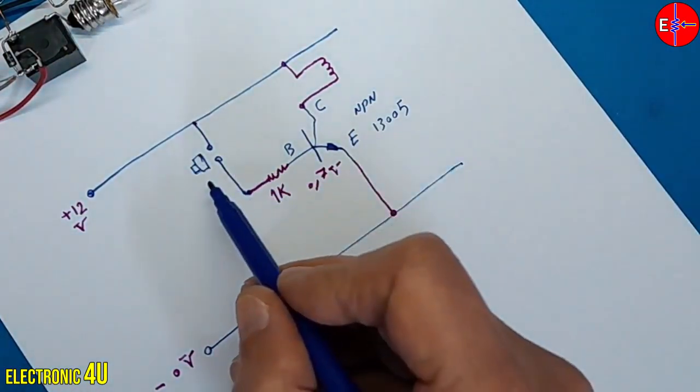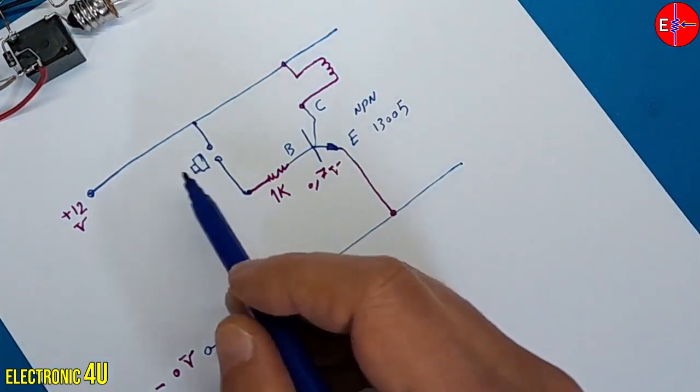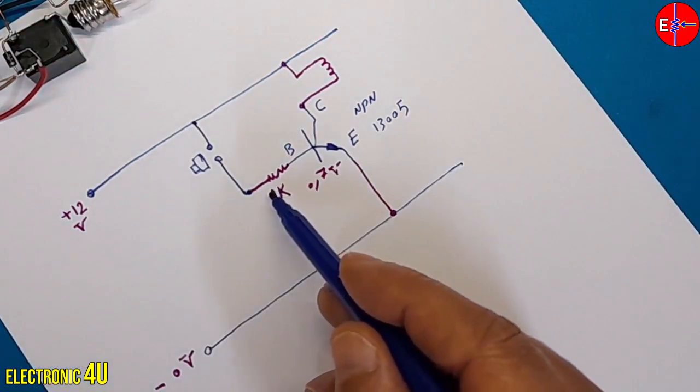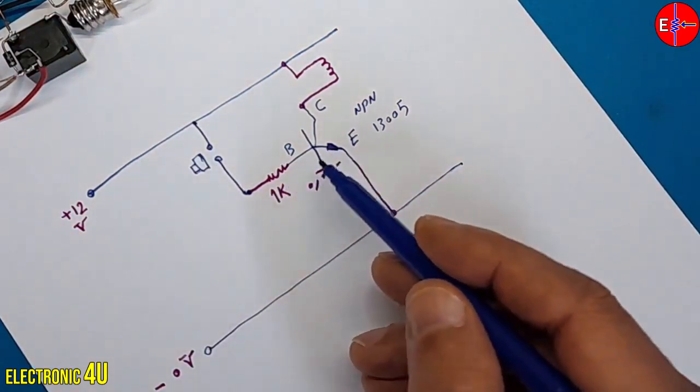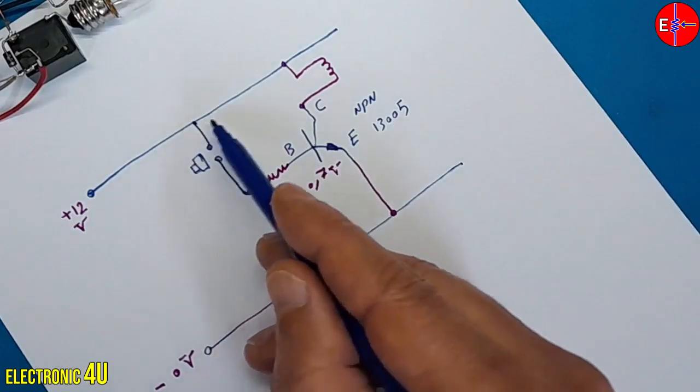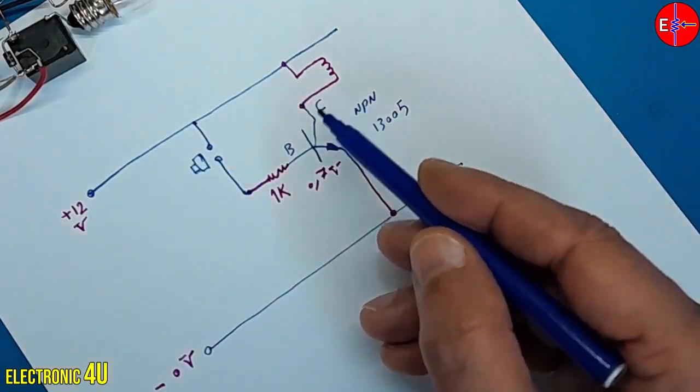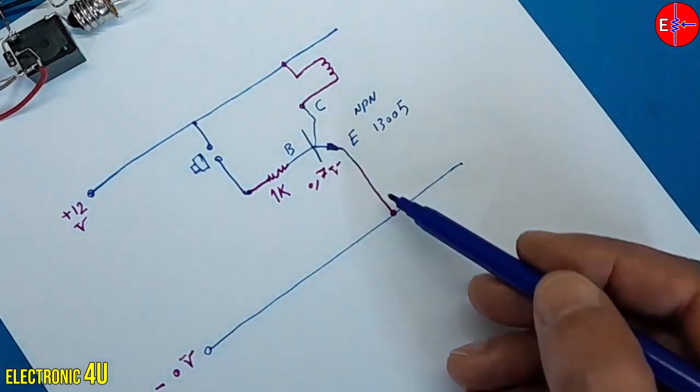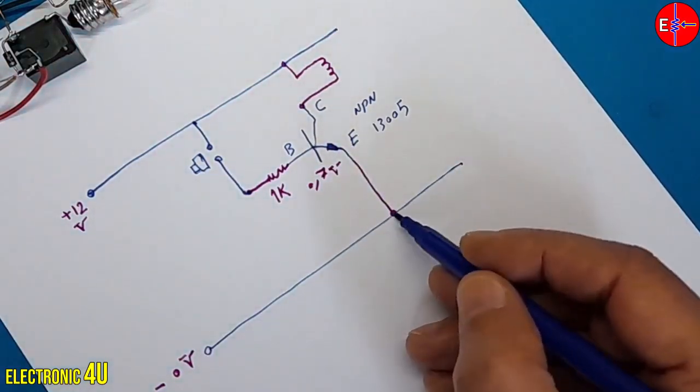When I press the button, the current flows through the positive line and the 1 kilo ohm resistor into the base pin, turning on the transistor. The current enters the relay coil, activates the relay, and through the collector reaches the emitter and returns to 0 volts via the negative line.